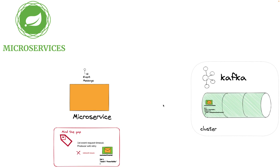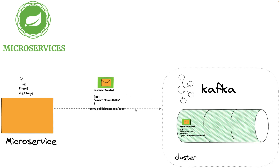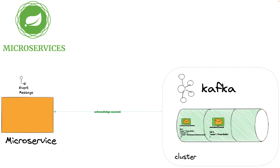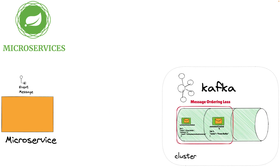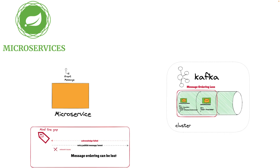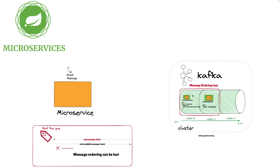The producer retries sending the first message. Kafka writes it to the topic and acknowledges it. But now we've lost the ordering of the messages. For many business use cases, this is not allowed — for example, you cannot consume 'customer contact added' before 'customer created'. Remember, Kafka is an append-only log: old messages are on the left, new on the right. Our consumer might consume events out of order.